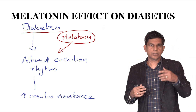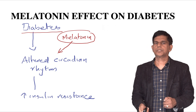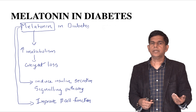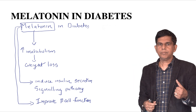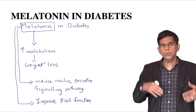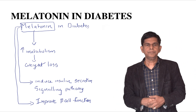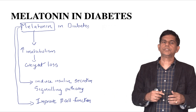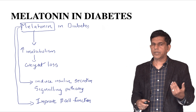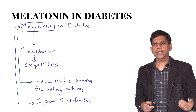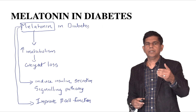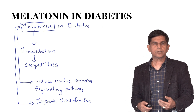Melatonin also has direct effects on blood sugar: it increases body metabolism, and when metabolism goes up, weight goes down, which decreases blood sugar. It also induces insulin secretion through signaling pathways and improves beta cell function. So there are many ways melatonin works physiologically to have a very good effect on controlling blood sugar.